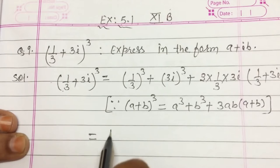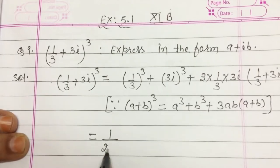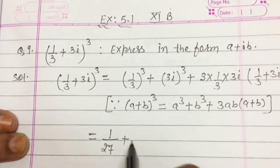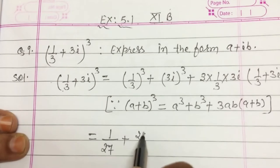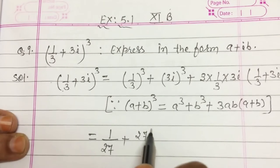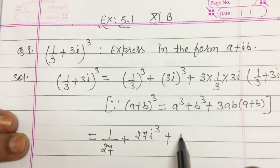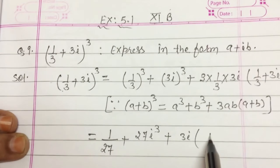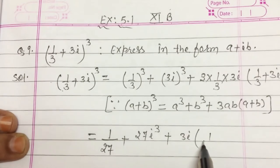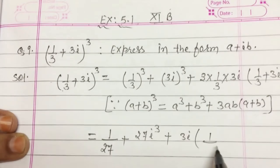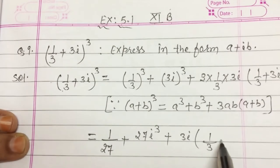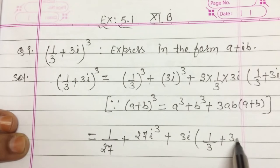And now simplify. You will get 1/27, then plus 27i³, plus from here it is 3i, and here it is (1/3 + 3i).